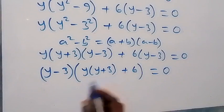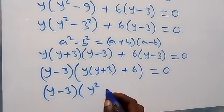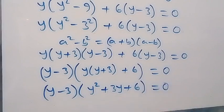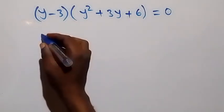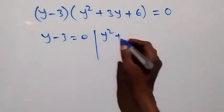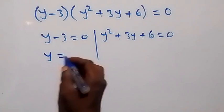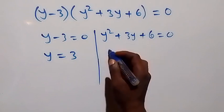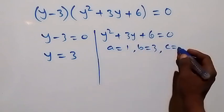Now we have y minus 3 equals 0, and we have y squared plus 3y plus 6 equals 0. For the quadratic, we compare with the general form and identify a equals 1, b equals 3, and c equals 6.